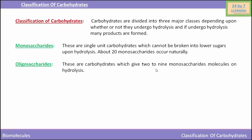The second class is oligosaccharides. These are carbohydrates which give two to nine monosaccharide molecules on hydrolysis. They are formed by the condensation of two to nine monosaccharide units joined together by a glycosidic bond. The glycosidic bond is formed between the aldehyde or ketone group of one monosaccharide and the alcohol group of another, formed by dehydration.